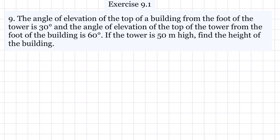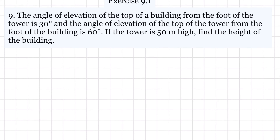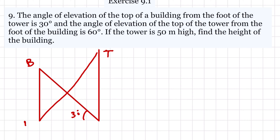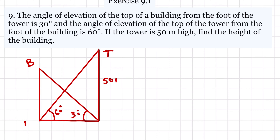Exercise 9.1, question number 9. Questions 1-8 are in our previous video. Angle of elevation of top of a building — this is the building. From the foot of a tower, the angle of elevation of the top of the building is 30 degrees. This is the tower. And the angle of elevation of the top of the tower from the foot of the building is 60 degrees. If the tower is 50 meters high, find the height of the building.